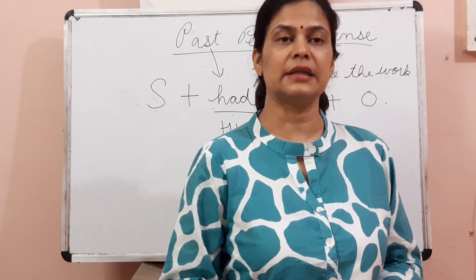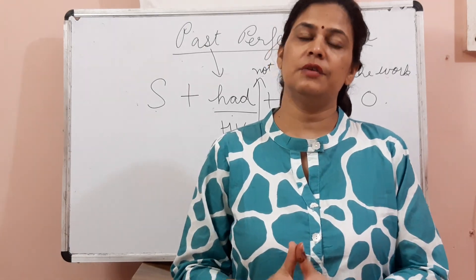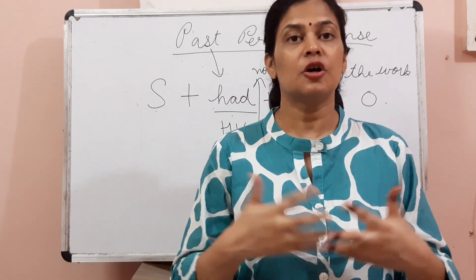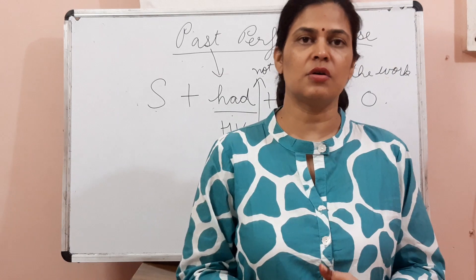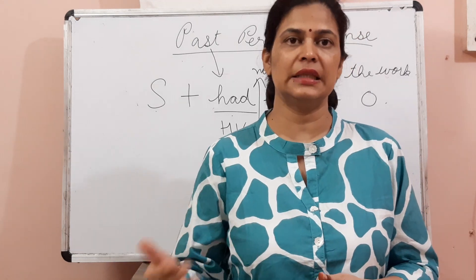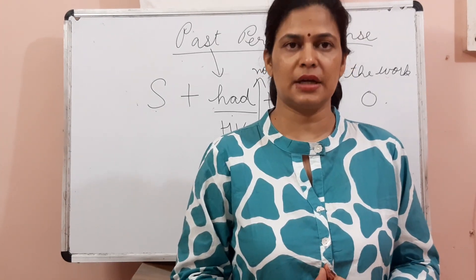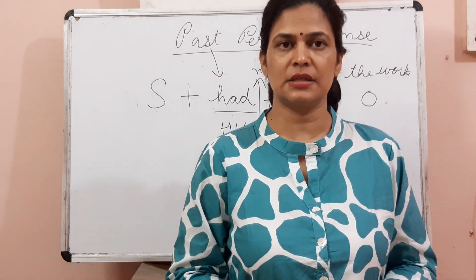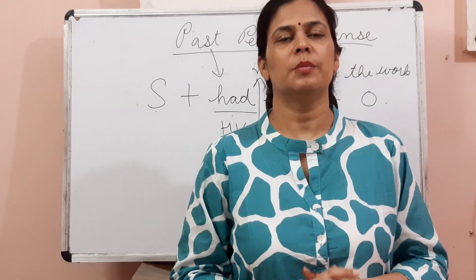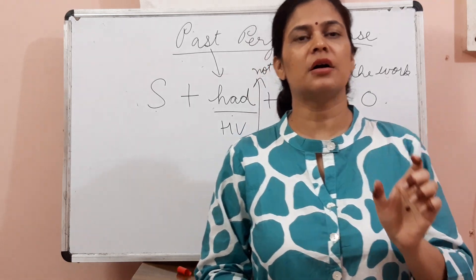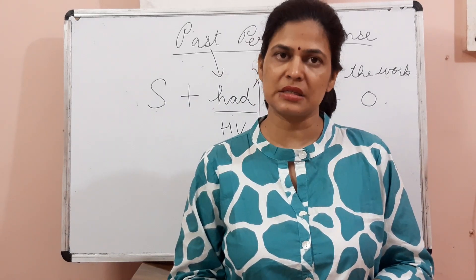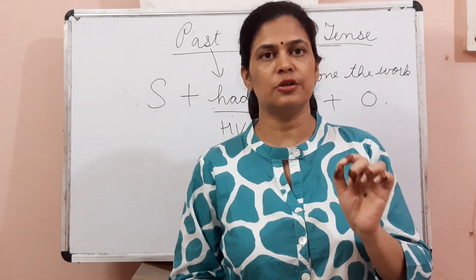There is another topic in your book: sequence of tense. First you should understand complex sentences, clauses — principal clause and subordinate clause — which will be taught in detail later. Right now, understand one thing: when there are two actions in a sentence — two parts — if the first part or first verb is in the past tense, the second verb should also be in the past tense. This is the first rule.